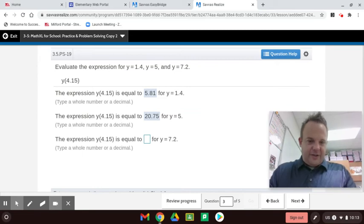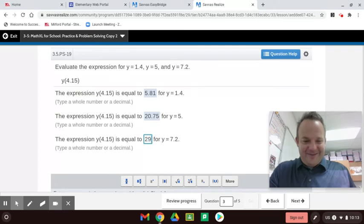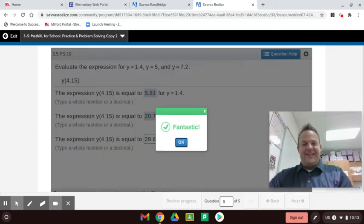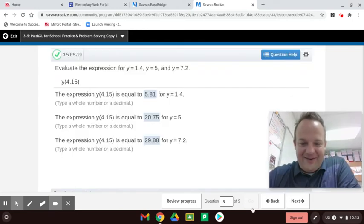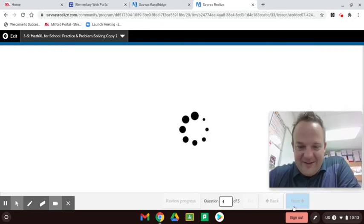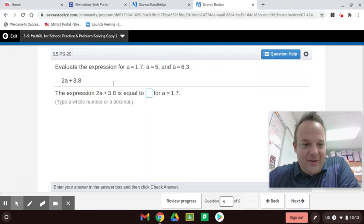And now we'll substitute. It's called substitution when you substitute it in for the variable. 7.2 times 4.15, and I got 29 and 88 hundredths. I keep typing, guys, I keep typing in, and I don't have my cursor on a thing. Has that ever happened to you guys?